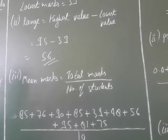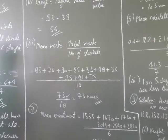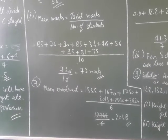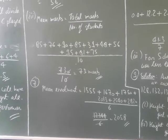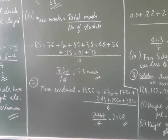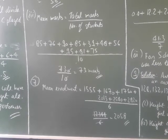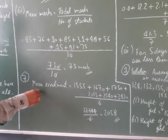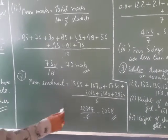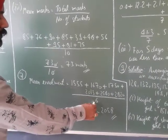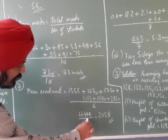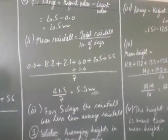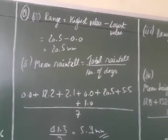Seventh question: the enrollment in a school during six consecutive years was: 1555, 1670, 1750, 2013, 2540, and 2820. Find the mean enrollment. Mean = sum of all observations divided by number of observations. The sum is 12348 divided by 6, giving a mean enrollment of 2058.